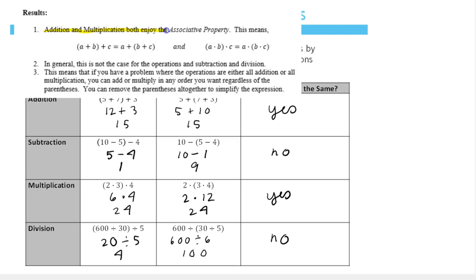Addition and multiplication both enjoy the associative property. This means (a + b) + c equals a + (b + c).